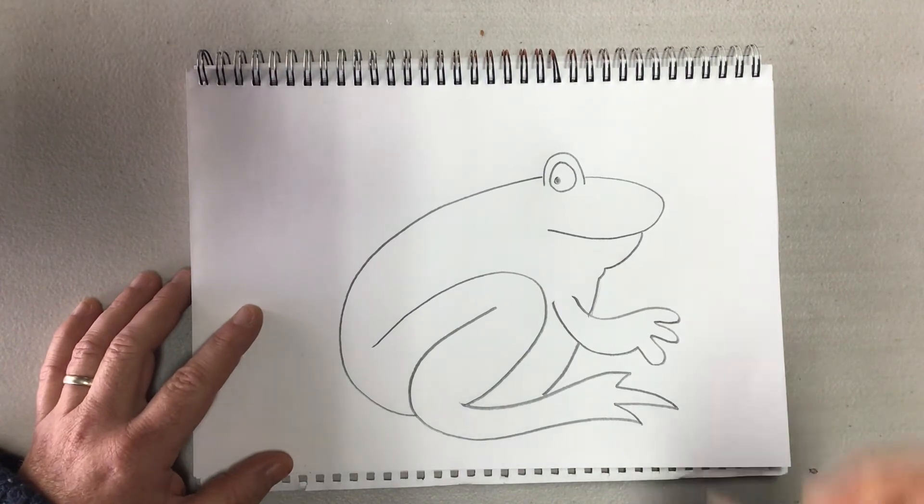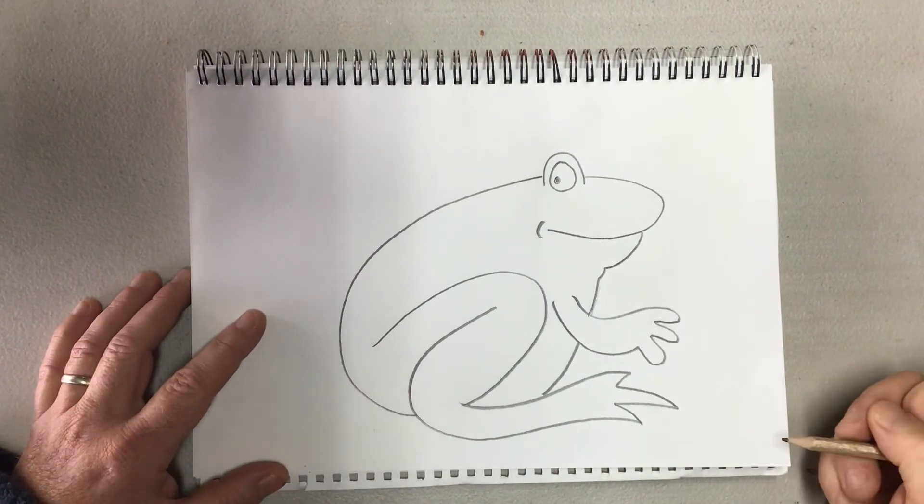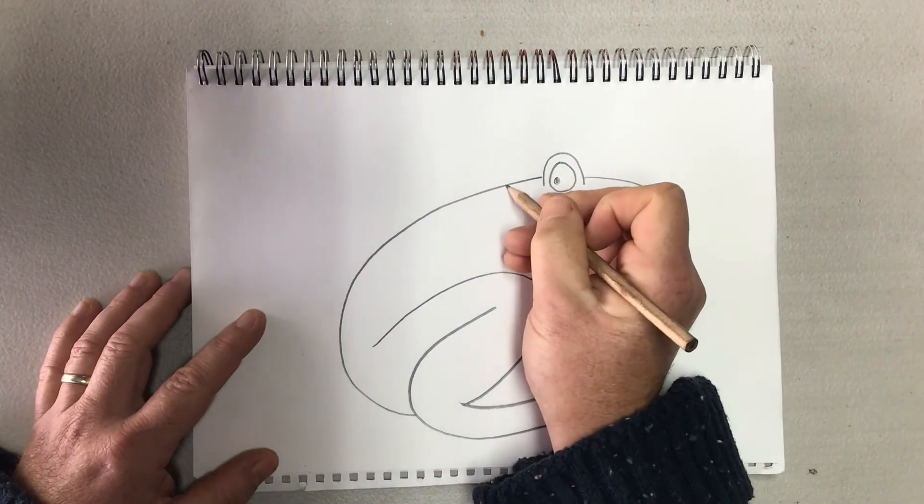For the next part, let's put it back a little, a dimple, a little smile, and let's put some spots on our frog. Let's decorate it.